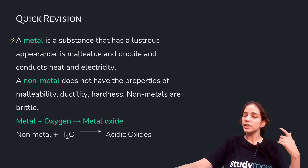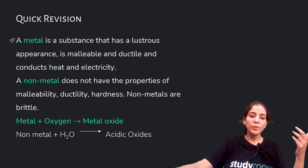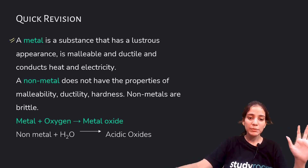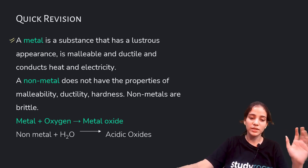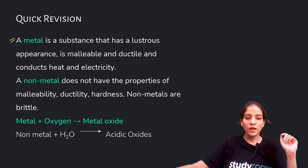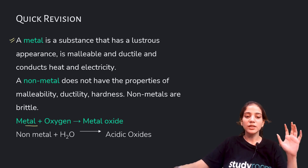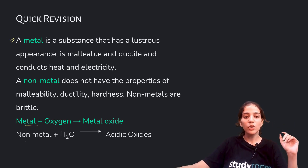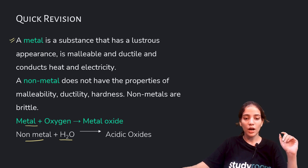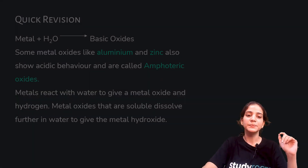A non-metal does not have properties of malleability, ductility, or hardness, and they are generally brittle. Whenever a metal is combined with oxygen, they produce a metal oxide. And non-metals, when combined with water, produce acidic oxide.